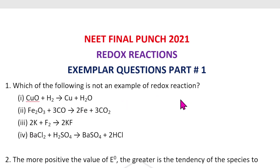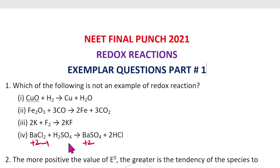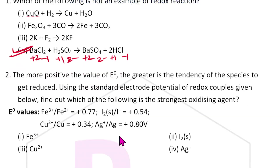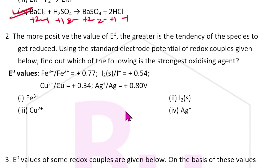Very simple — if reduction and oxidation are not occurring, then it is not a redox reaction. Looking at the options: Ba²⁺, Cl⁻, H⁺, SO₄²⁻ — there is no change in oxidation state here. Because of that, there is no redox. The answer for this question is the fourth option.